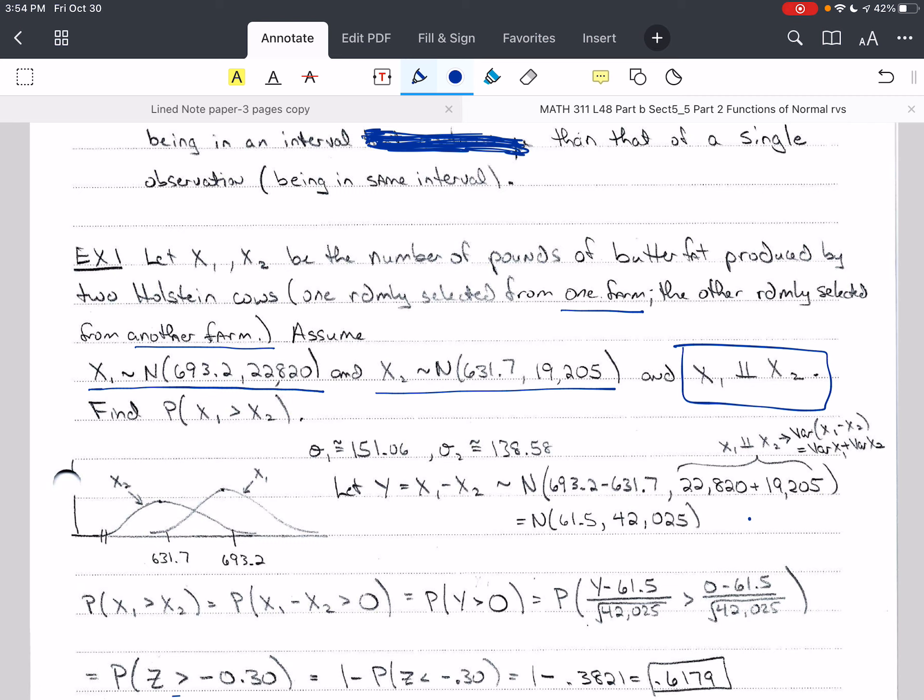Now, σ of 1 is going to be the square root of 22,820, and σ₂ is the square root of 19,205.